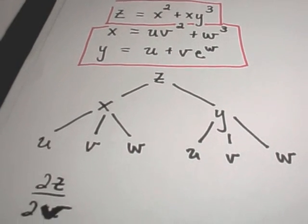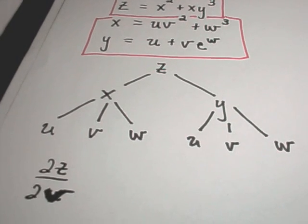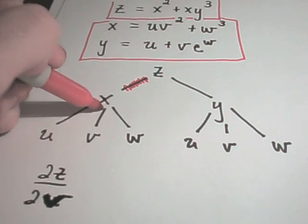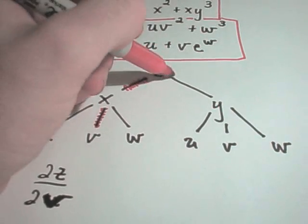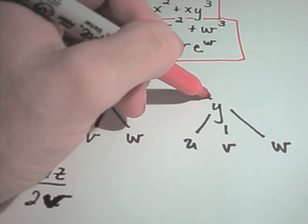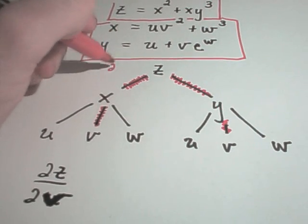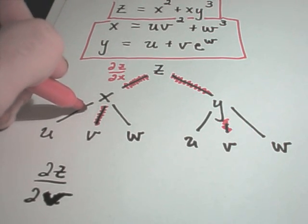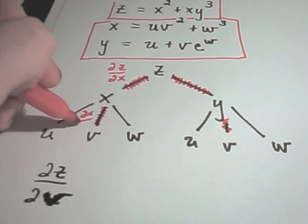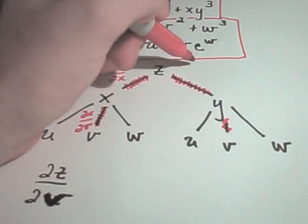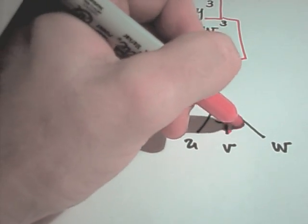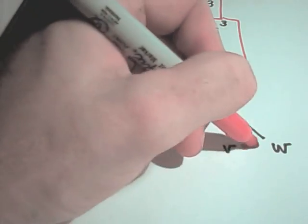In this example, I'm going to find the partial derivative of z with respect to v. I start at z and follow all the branches down until I get to v. The first branch corresponds to the partial of z with respect to x, and then the next branch corresponds to the partial of x with respect to v. Then I've got the partial of z with respect to y, and then the partial of y with respect to v.